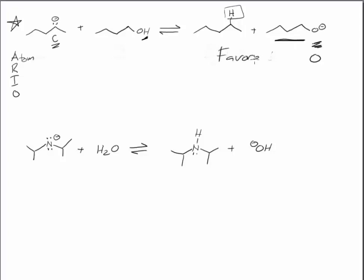And so again, we have the same conclusion except that ARIO doesn't necessarily tell us how favored it is. Remember that there was 34 PKA units difference. So it's extremely favored at equilibrium. ARIO just tells us this side is favored. So let's circle the products and that is favored.